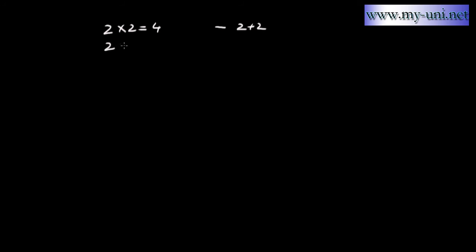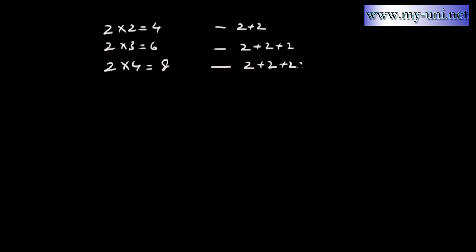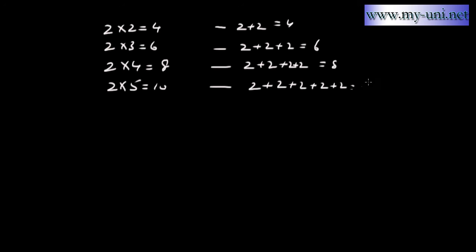So 2 times 2 is equal to 4, which means 2 plus 2. And 2 times 3 is equal to 6, which simply means 2 plus 2 plus 2 — 2 is being added 3 times. Similarly, 2 times 4 is equal to 8, and 2 times 5 is equal to 10, meaning 2 plus 2 plus 2 plus 2 plus 2.